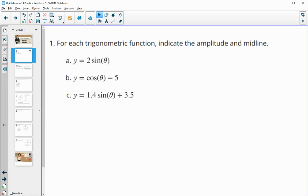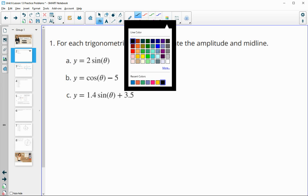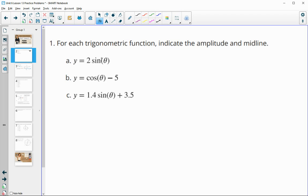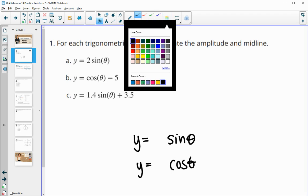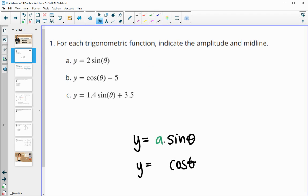Number one gives us three different trig functions, and it wants us to determine what the amplitude and the midline are. The amplitude is the number multiplied out front of your trig function. So if we were to do a general trig function, or the cosine function, your amplitude would be the number that's multiplied out front of these.